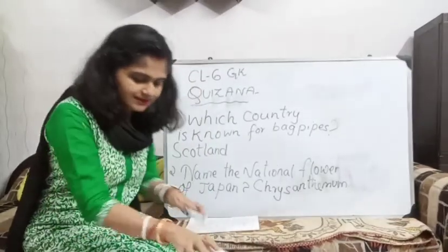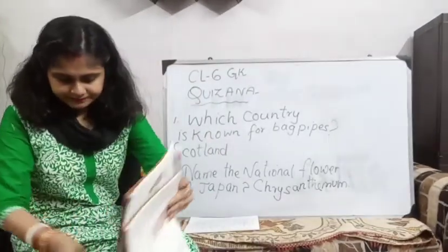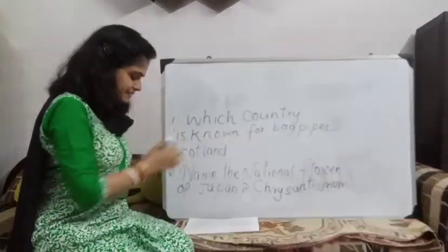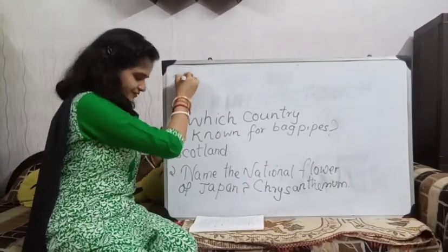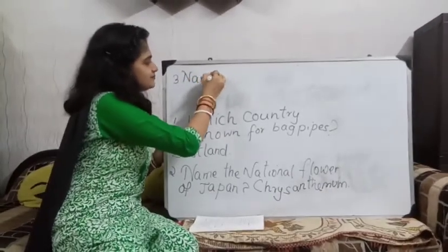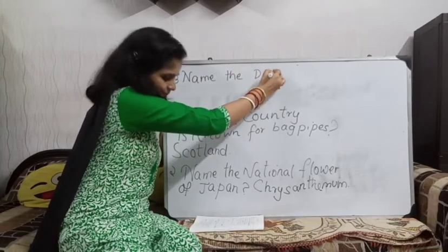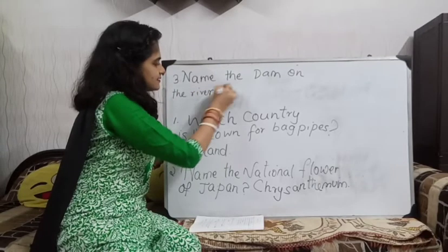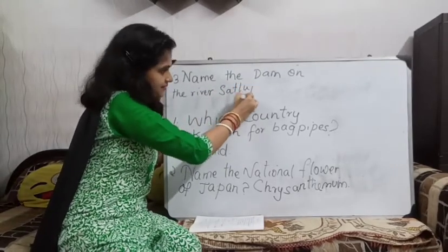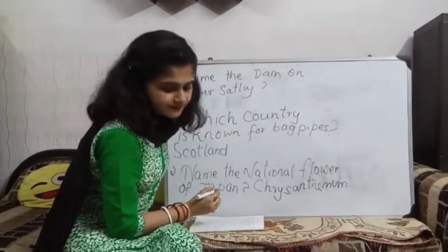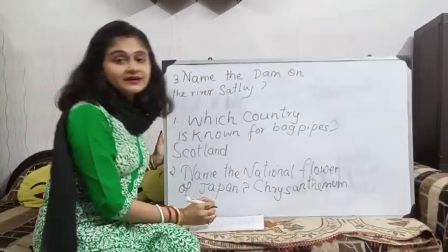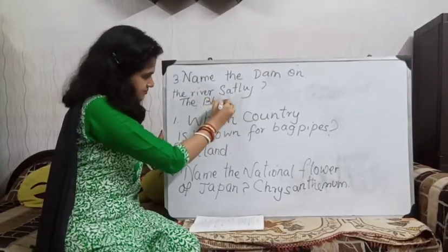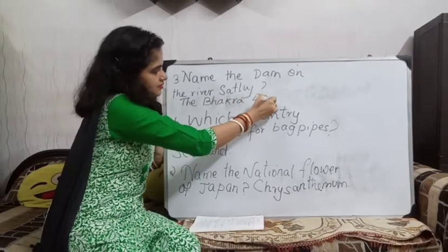Question number three — I'll be giving you only five to six questions. Question number three: name the dam on the river Sutlej. The answer is the Bhakra Dam.